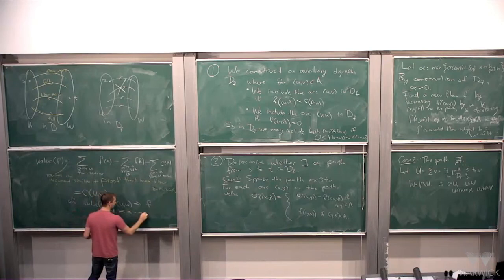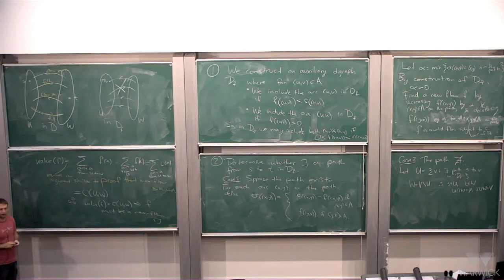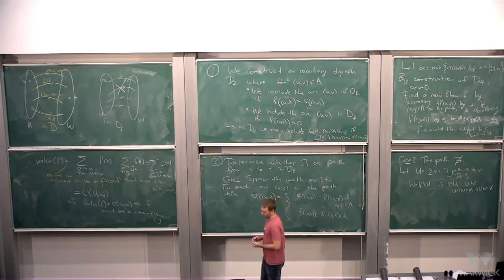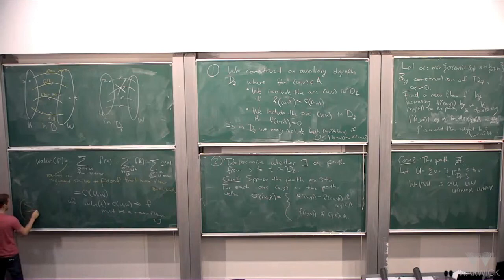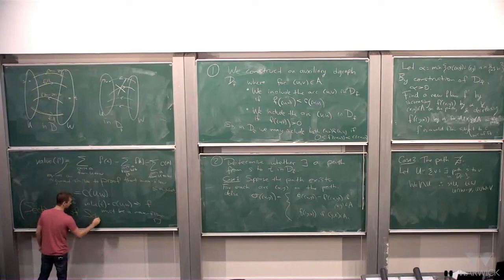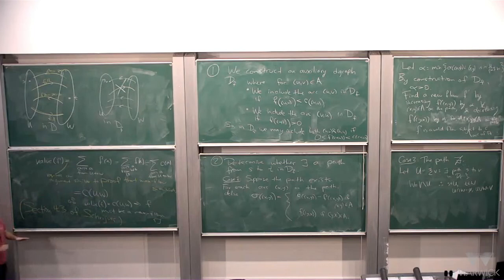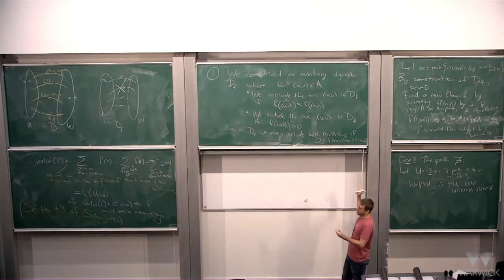Therefore the value of f equals the capacity of U,W, which implies f must be a max flow — because you simply cannot find a flow bigger than the capacity of a cut. This was the flow augmentation algorithm: given a flow, it finds a bigger flow or shows one doesn't exist.